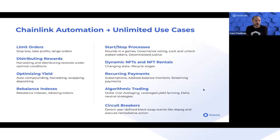Things like limit orders, distributing rewards, and optimizing yield are all really good examples. Algorithmic trading is a very common example right now — you can create delta-neutral strategies that monitor debt ratios or collateral ratios.